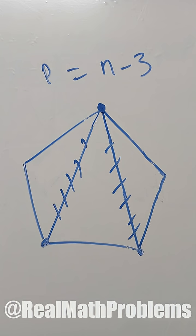The number of diagonals p is equal to the number of edges n minus 3, because when we connect points to make diagonals, we have to eliminate 3 invalid points.